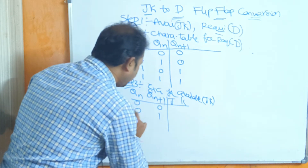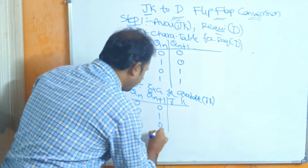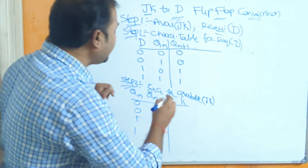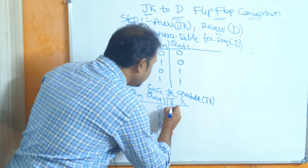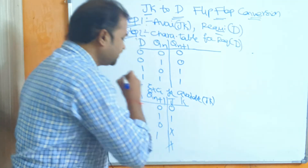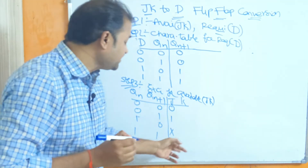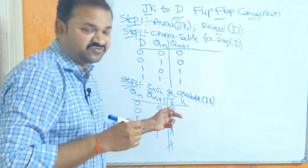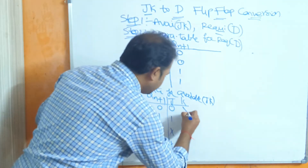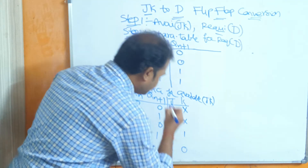The four Qn, Qn+1 combinations are: 0,0 then 0,1 then 1,0 then 1,1. The J column values are: 0, 1, don't care, don't care. The K column is the reverse of J, so the K values are: don't care, don't care, 1, 0.